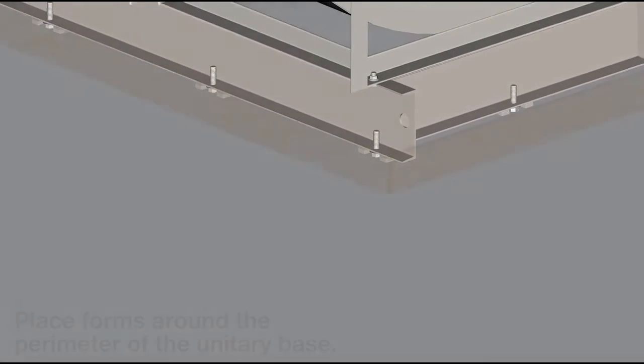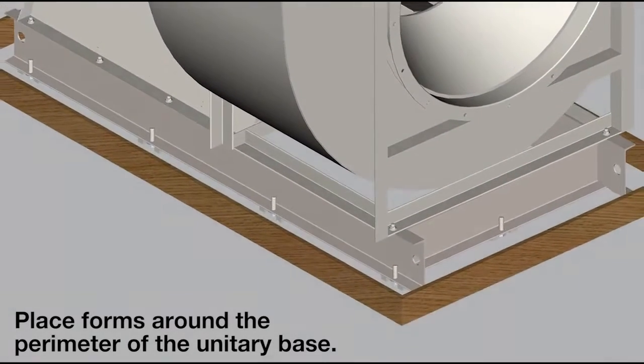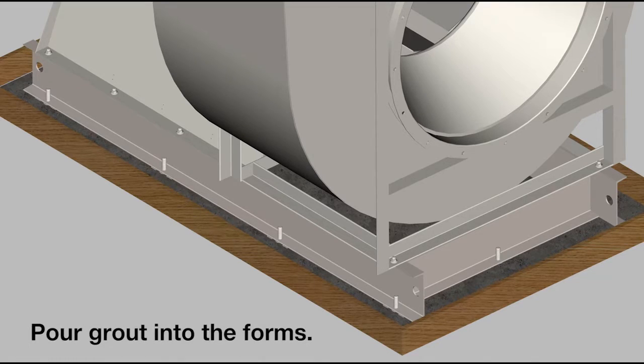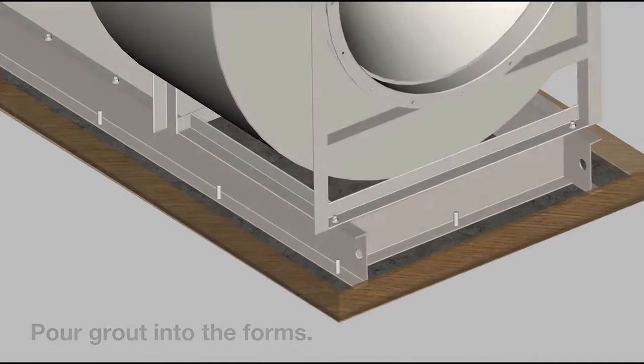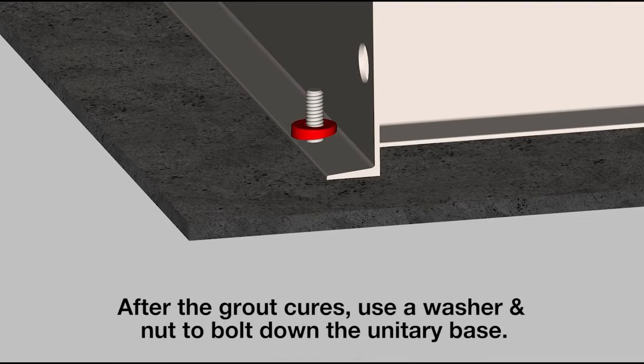Once the fan is leveled, place forms around the perimeter of the unitary base and pour grout into the forms. After the grout cures, use a washer and nut to bolt down the unitary base.